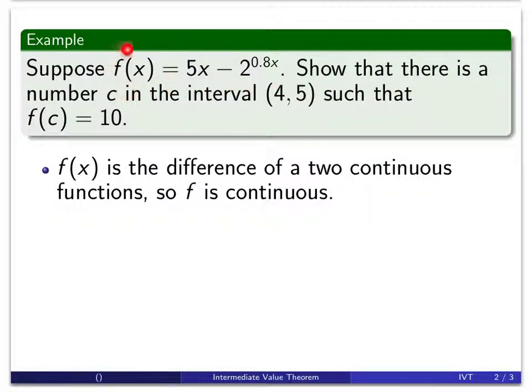All right, so first of all, we have to make sure that our function is continuous. If our function is not continuous, then all bets are off, okay? We're not guaranteed that there's such a number c. f is 5x, which is a linear function, also a polynomial, minus 2 to the 0.8x, which is an exponential function. f is the difference of two continuous functions, so f is continuous. This is an important thing to state when we're dealing with the Intermediate Value Theorem. You have to state or even show that the function is continuous.